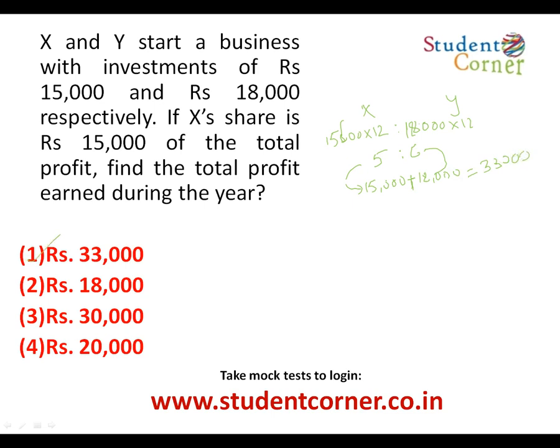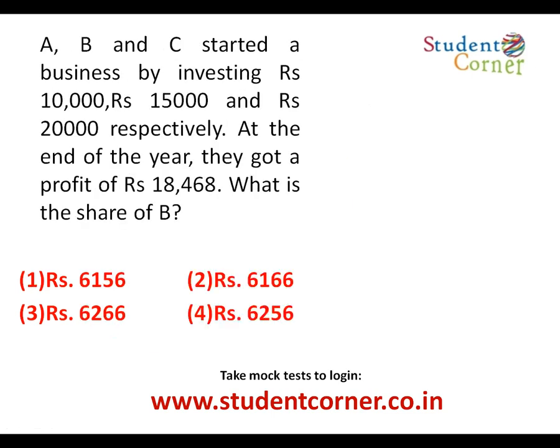The second question has three partners. The tenure is twelve months for everyone. A, B, and C start a business investing ten thousand, fifteen thousand, and twenty thousand rupees. At the end of the year they got a total profit of eighteen thousand four hundred and sixty. Find B's share. We write: ten thousand into twelve, fifteen thousand into twelve, and twenty thousand into twelve.